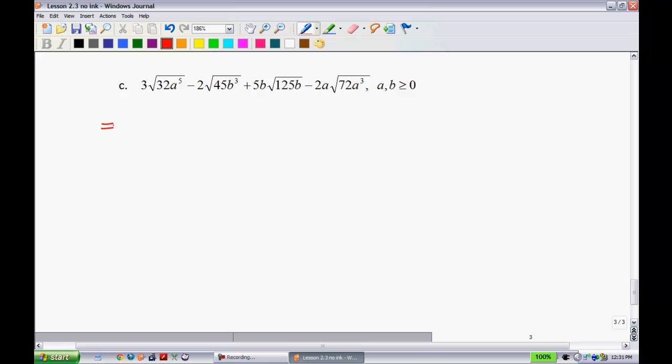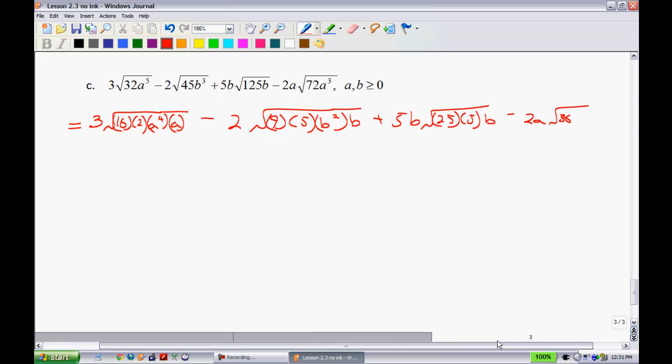Last one. All right. A little bit more work to do here. All right. We have some simplifying that we can do. So, let's go ahead and simplify first. And then after we're done that, then we'll go and try and combine our terms. 3. Since we're dealing with the square root, the perfect square that goes into that would be 16 times 2. Since we're dealing with square root land, I'm going to go and put this into an even power. So, a to the 4. Minus 2. 9 times 5. 9 being the perfect square. I'll make this also even. So, b squared times a b. Plus 5b. Perfect square that goes into 125 would be 25 times 5. And then lastly, minus 2a. Perfect square that goes into this would be 36 times 2. And then again, I'll write this as a squared, an even power, and an a outside. We'll simplify it.